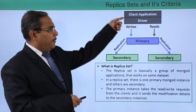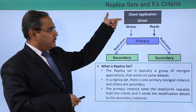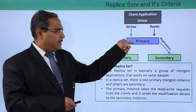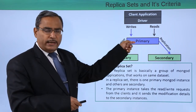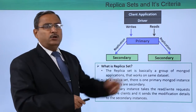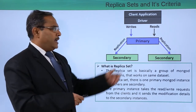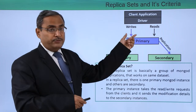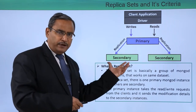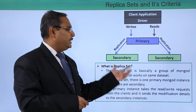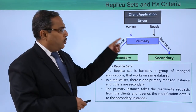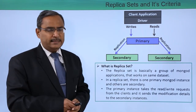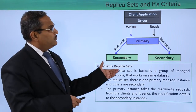Consider this diagram: we have the client application running through a driver. The read and write operations are performed with the primary MongoD instance. This primary MongoD instance puts the replication details to the secondary MongoD instances. Any modifications, updates, or deletions from the read/write operations are conveyed to the secondary MongoD instances. So, one primary instance and one or more secondary instances make up the replica set.